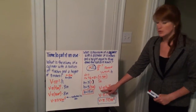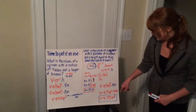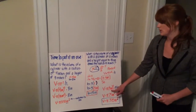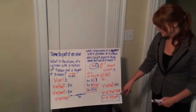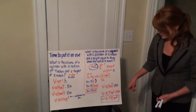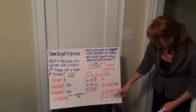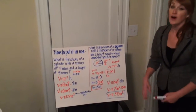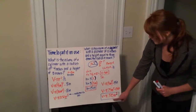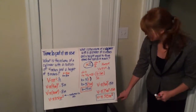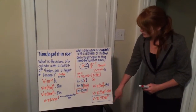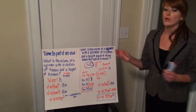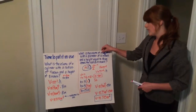Our volume equals pi r squared times height. So let's plug in pi times 5 inches squared times 15 inches, our height. Plug and chug: pi times 25 inches squared times 15 inches. Our final answer is pi times 375 inches cubed. It's really important to make sure you have your units there, and make sure the units are cubed — or you will be counted off. That's very important.